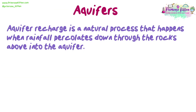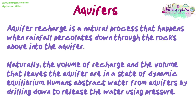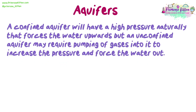Aquifer recharge is a natural process that happens when rainfall percolates down through the rocks above into the aquifer. Naturally, the volume of recharge and the volume that leaves the aquifer are in a state of dynamic equilibrium. Humans abstract water from aquifers by drilling down to release the water using pressure. A confined aquifer will have a high pressure naturally that forces the water upwards, but an unconfined aquifer may require pumping of gases into it to increase the pressure and force the water out.